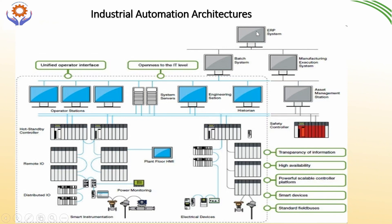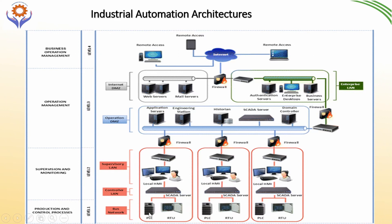In this example, from level one — PLCs and RTUs — connected to SCADA servers, this is called the controller LAN. From the controller LAN, it connects to local HMIs and SCADA systems, called supervisory controllers. After this, firewalls are present, followed by a layer with engineering stations, application servers, historians, and SCADA servers. From there, the next layer connects to web servers, mail servers, authentication servers, and business servers. This architecture is based on ISA-95 but has additional features for internet connectivity, remote access, and IIoT optimization.